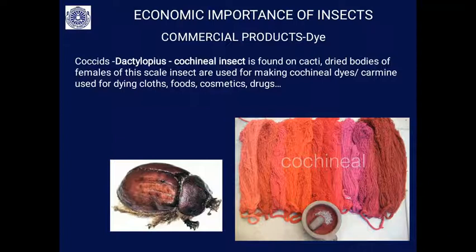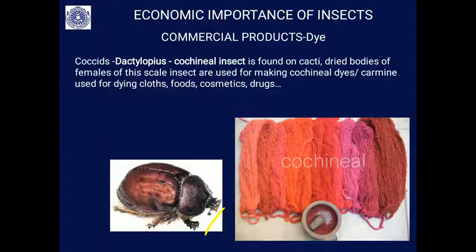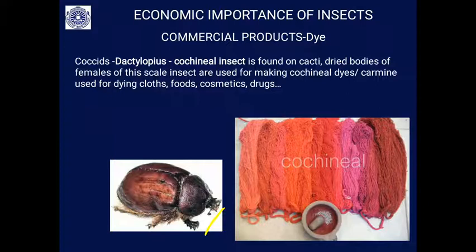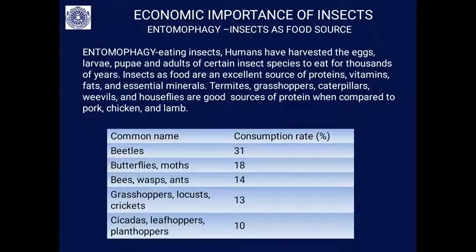Another commercial product is dye from coccid insects — Dactylopius, the cochineal insect. Found on cacti plants, they are collected, dried, and powdered. These scale insects are used to make cochineal dye — a carmine dye used in dyeing cloth and as a coloring agent in food, cosmetics, and drugs. This is the dye derived from insects.